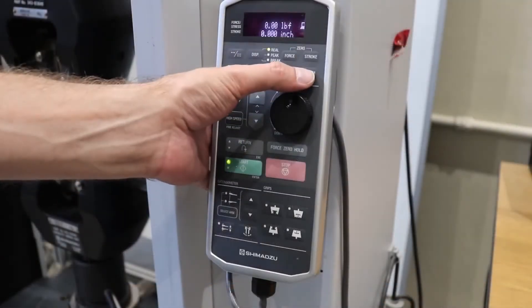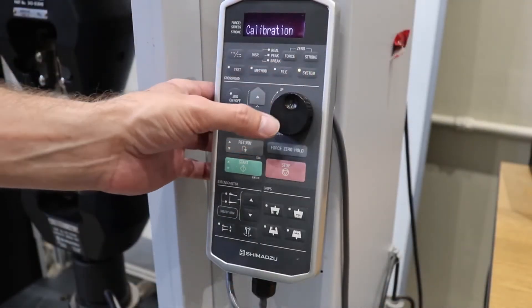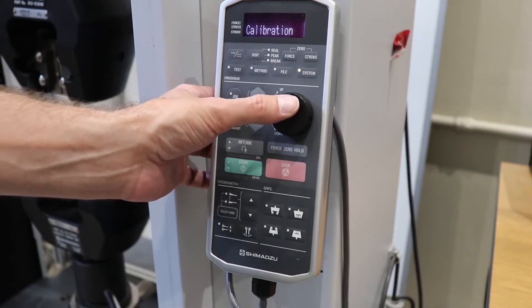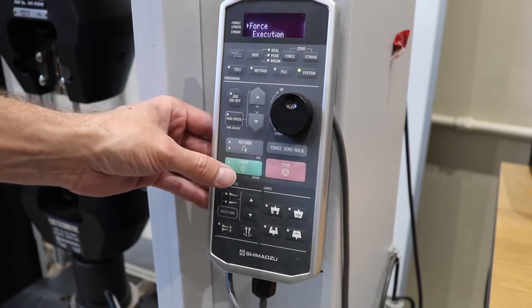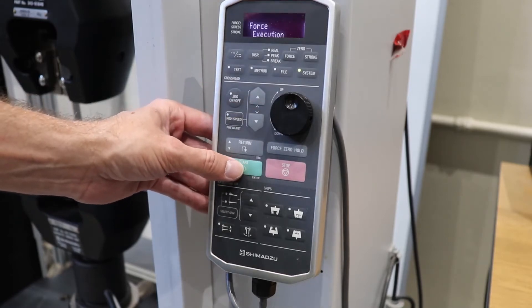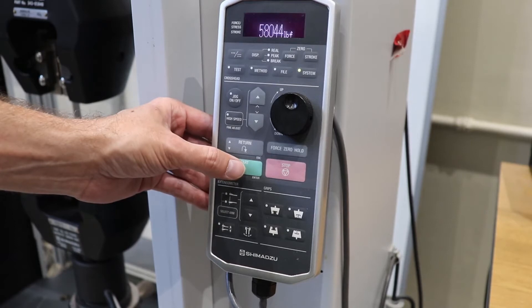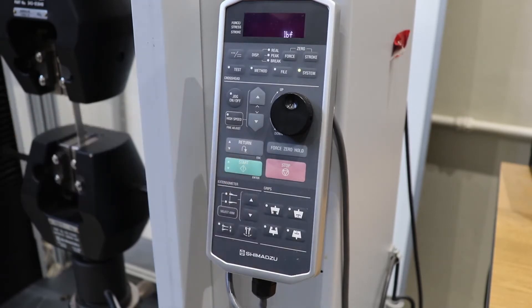Now we will go about calibrating the machine. To do so, we click System, press Start, Force Execution should pop up, and press Start again. This process takes a moment, please be patient. Once the process completed, Force Execution will show up on the screen. Simply press the Test button.